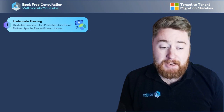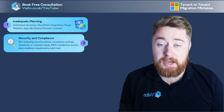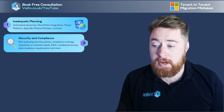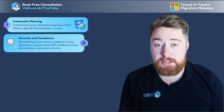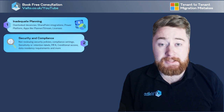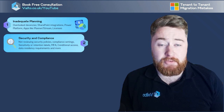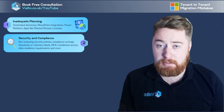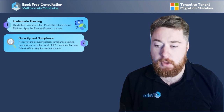The second thing we often see as a mistake is the security and compliance considerations. Not reviewing things like security policies and compliance settings can really make a tenant-to-tenant migration come unstuck. It might be that there are sensitivity labels which have previously been used for things like internal-only or sensitive-related data, which have not been set up and configured properly on the new target tenant.